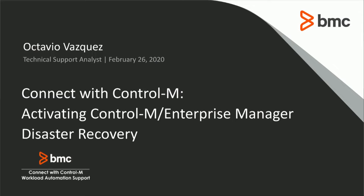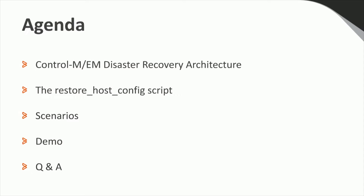Let's check today's agenda. We will start by describing the general architecture of a Control M Enterprise Manager DR server and how it interacts with your primary environment. Next, I will describe how we will use the Restore Host Config script to switch from the primary to the DR environment and back. After that, I will explain the scenario we will address during our demo. We will continue with a live demo and finally wrap up with a Q&A session.